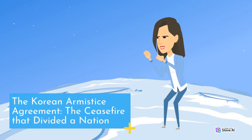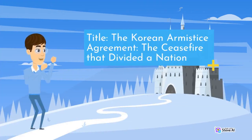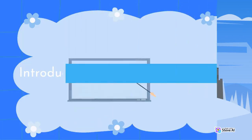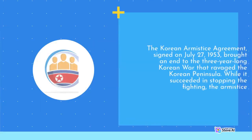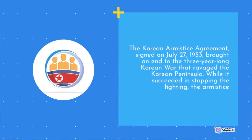The Korean Armistice Agreement: The Ceasefire That Divided a Nation. The Korean Armistice Agreement, signed on July 27, 1953, brought an end to the three-year-long Korean War that ravaged the Korean Peninsula.